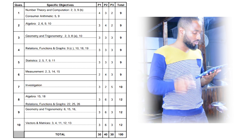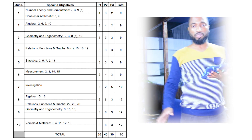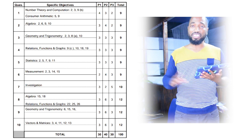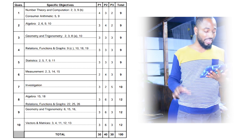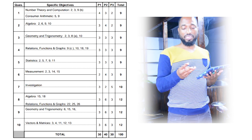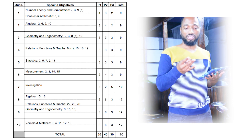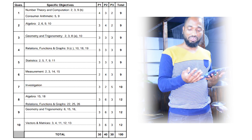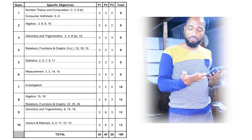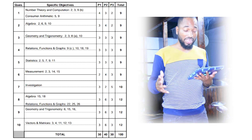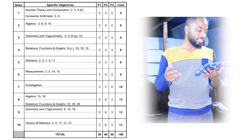Number two is algebra — every single thing in basic algebra, from linear simultaneous equations, substitution, simplification, factorization, binary operators, stuff like that.